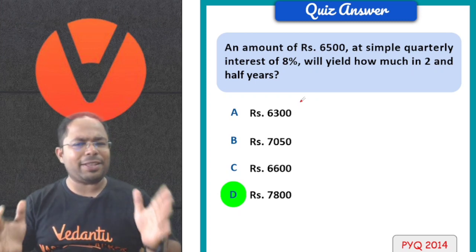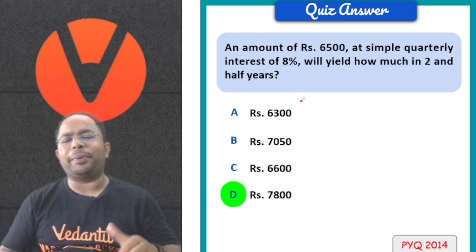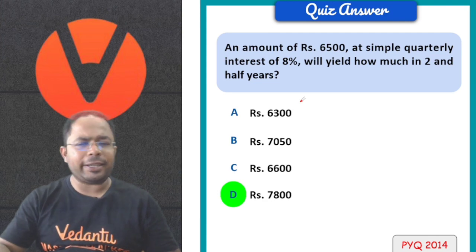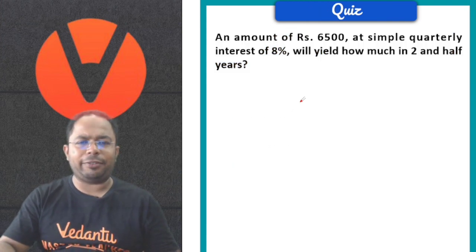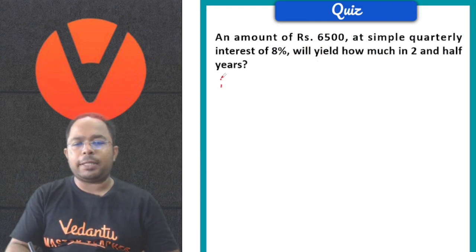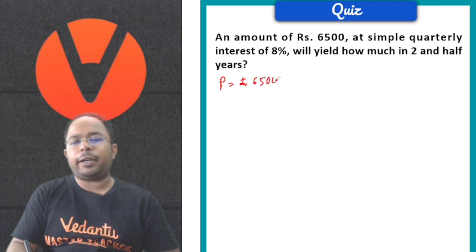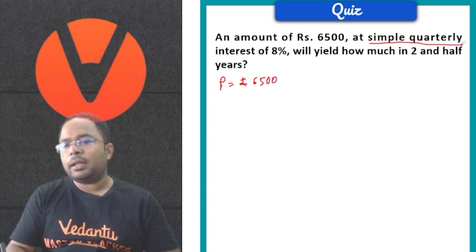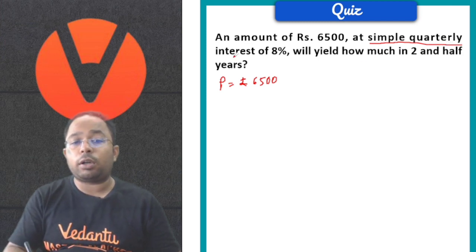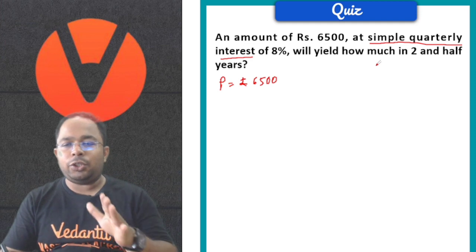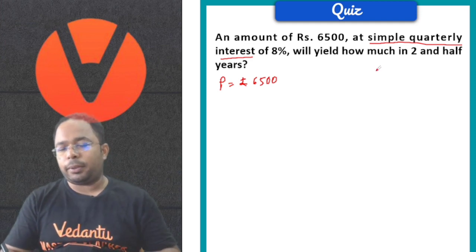The answer is Rs. 7,800. If you got 7,800, very good. All right, if not, no problem. The principal is Rs. 6,500. Now here there's a very important thing: simple interest is being done, but it says quarterly interest. See, in one year there are 4 quarters; 3 months make 1 quarter.